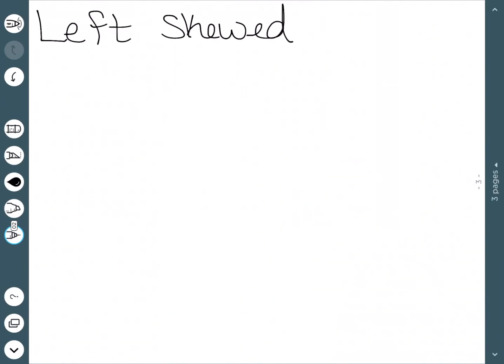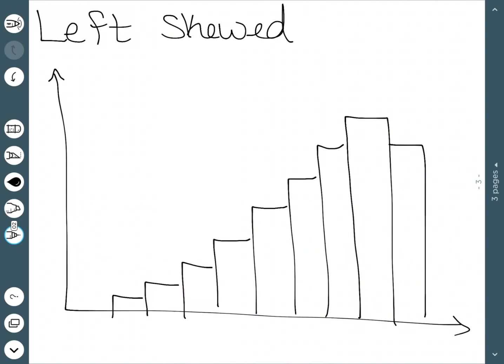Just like we have right skewed, we also have left skewed, which is going to be very similar. Here's a left skewed distribution. We notice the peak is at the right of the distribution, and then there's this tail to the left. This one has a lot of high values and very few low values.